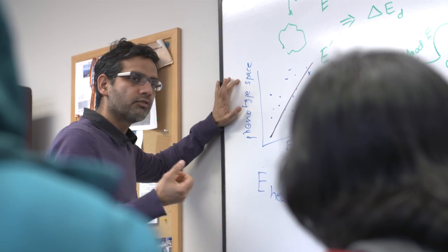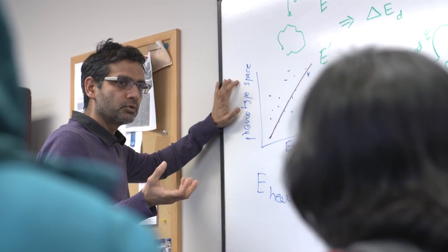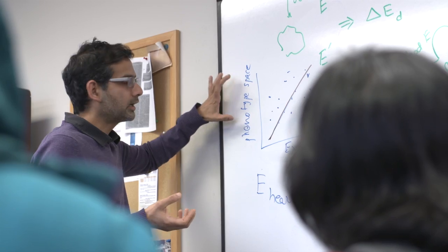The broad million-dollar question in the field of biomedicine is how does an individual's genome determine the person's susceptibility to different diseases. Everybody in the field is trying to understand this relationship. It goes through many, many layers of control.